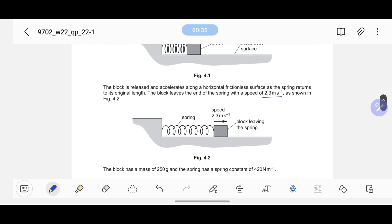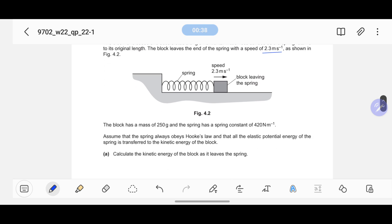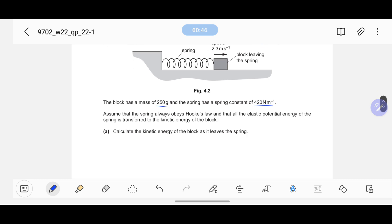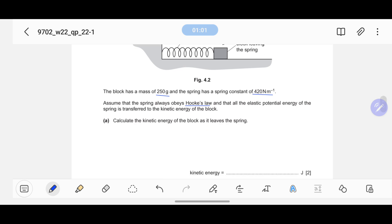The block has a mass of 250 grams and the spring has a spring constant of 420 newton per meter. Assume that the spring always obeys Hooke's law and that all the elastic potential energy of the spring is transferred to the kinetic energy of the block. Calculate the kinetic energy of the block as it leaves the spring.